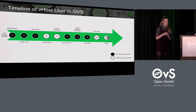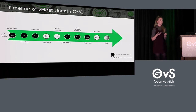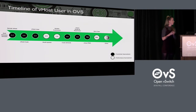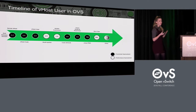This graphic represents the past, present, and future of vhost user in Open vSwitch. It shows the different release numbers in which different vhost related features have been added. These features are added by a number of different contributors, not just myself. It's color coded as well — the black dots represent functional improvements and the white represent performance improvements. You can see a good mixture of both on the graphic.